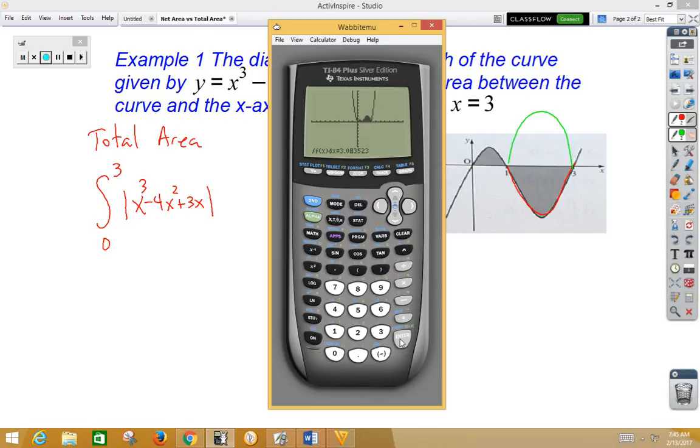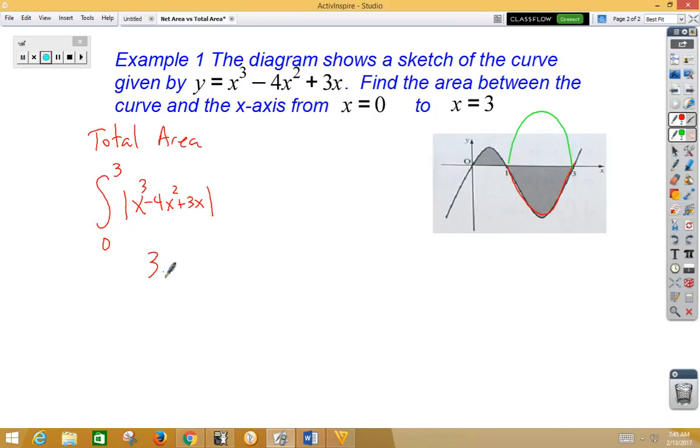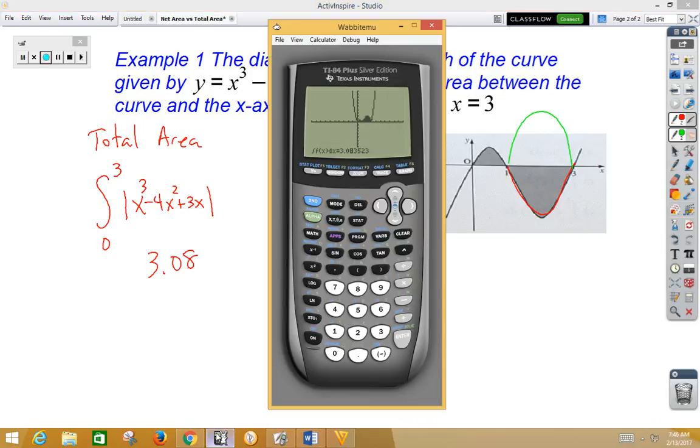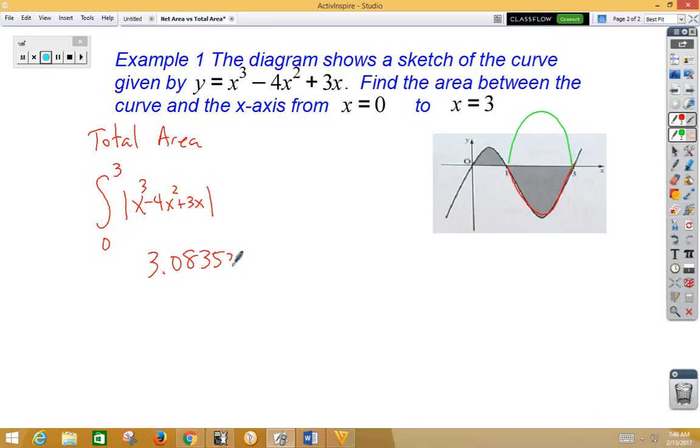Make sure that you do not round. Go ahead and put the entire value. So, 3.083523. Never round unless they tell you to round. Now, oh, I forgot my dx. Don't forget your dx there.